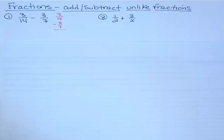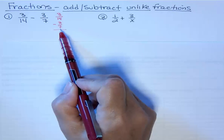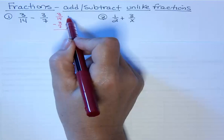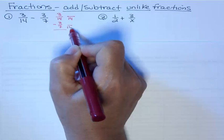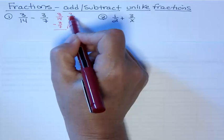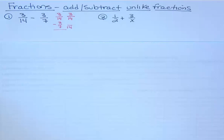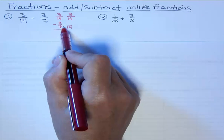3/14 minus 3/7. What you want to do is find the LCD, or least common denominator. What's the smallest number that 14 goes into, but 7 also goes into? You might see pretty readily that it's 14 — they're both going to go into 14, so that's my common denominator. The 3/14 already has a 14, so the 3 doesn't change. But in the second fraction, there was a 7, and I changed it to 14, which means I multiplied that by 2.